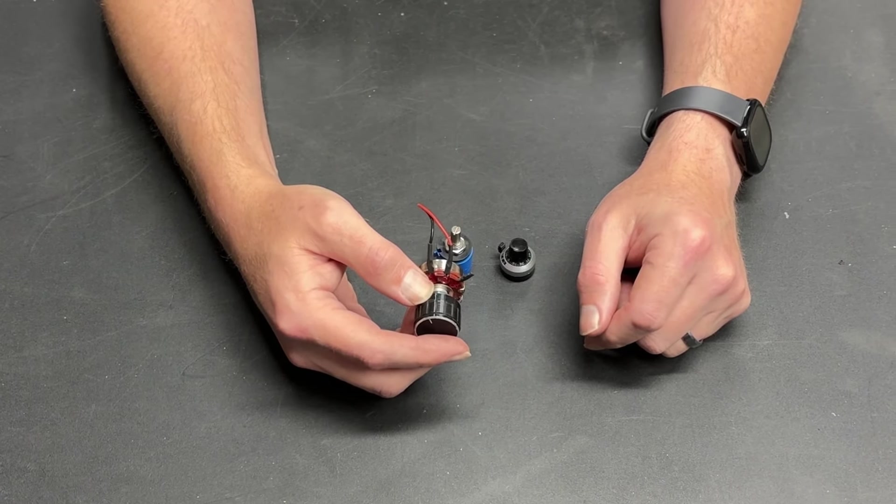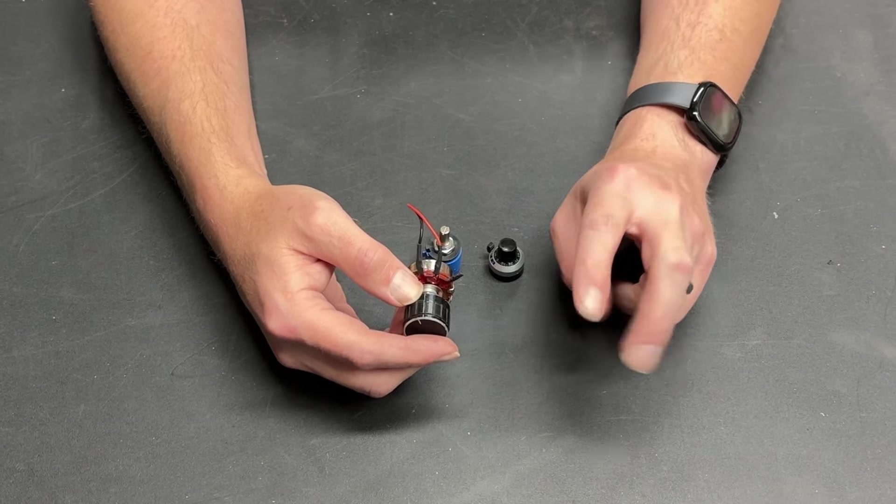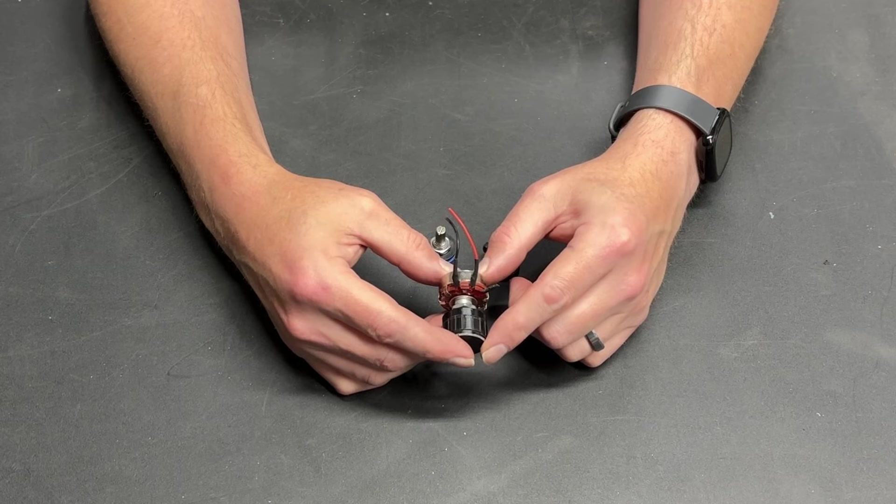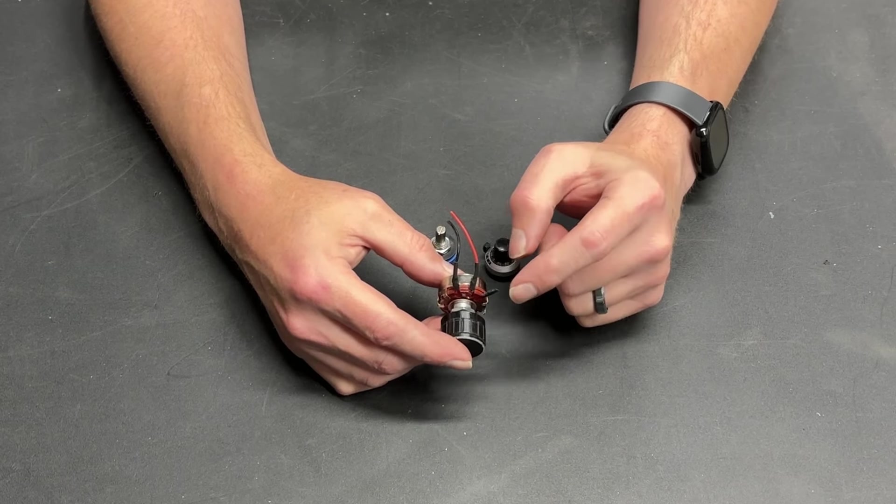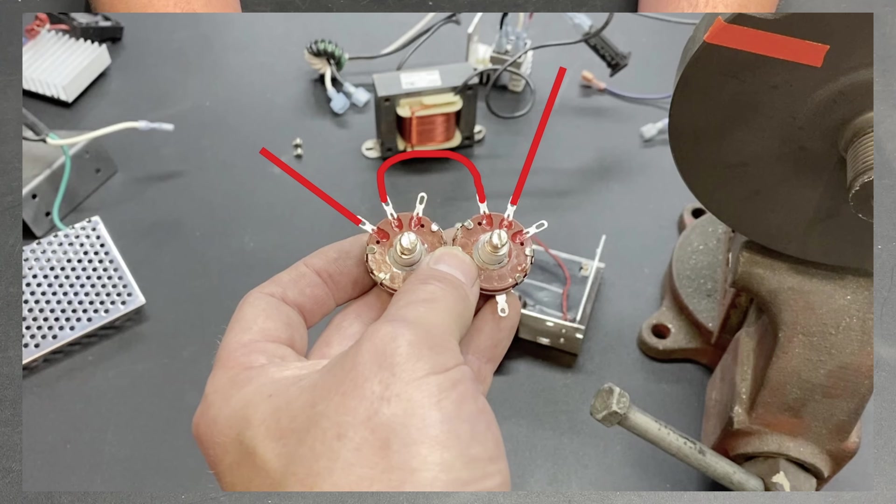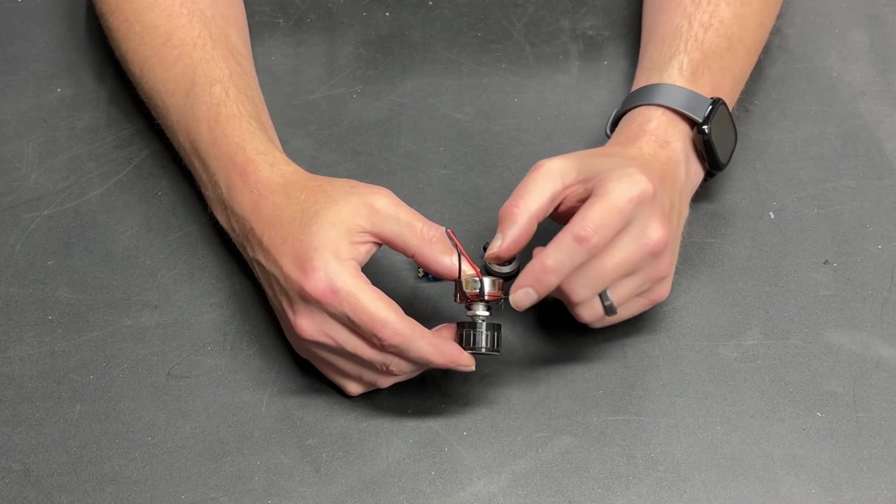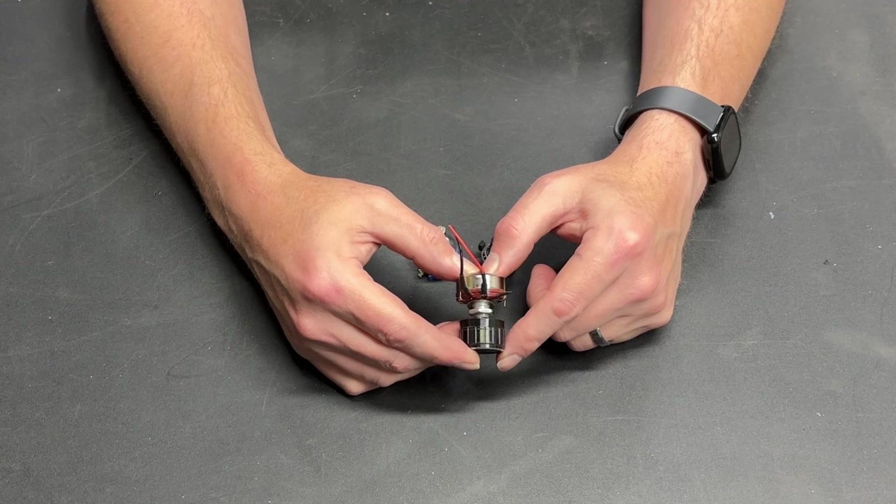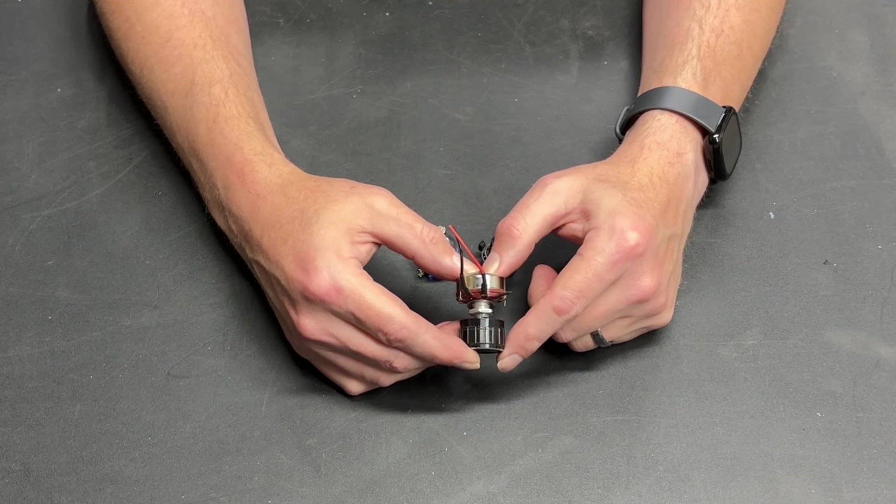I had someone make a comment that they had a setup that was utilizing all three terminals for the potentiometer, and sadly, that does not easily allow you to hook up two potentiometers. When you hook up two of these together to have a fine and a coarse speed control, you do it in series.